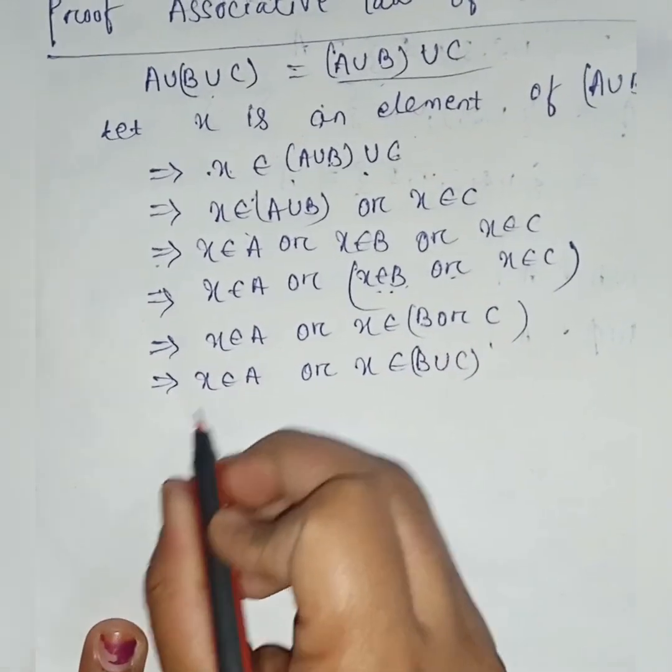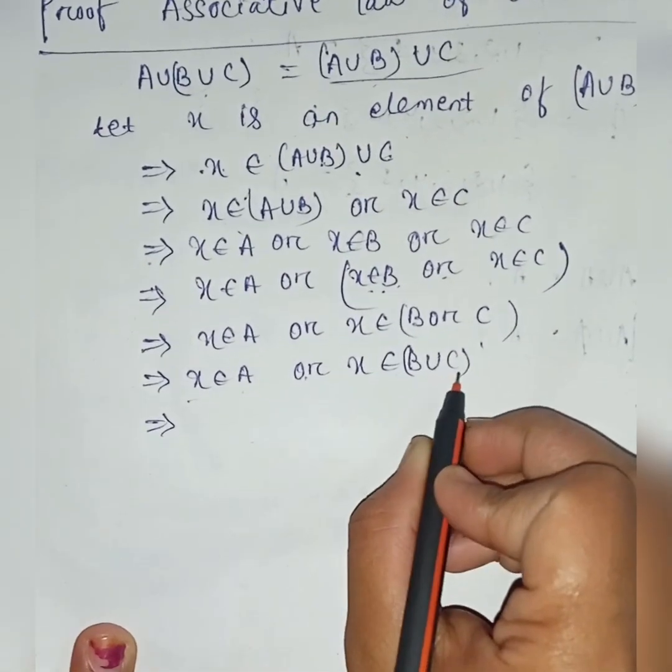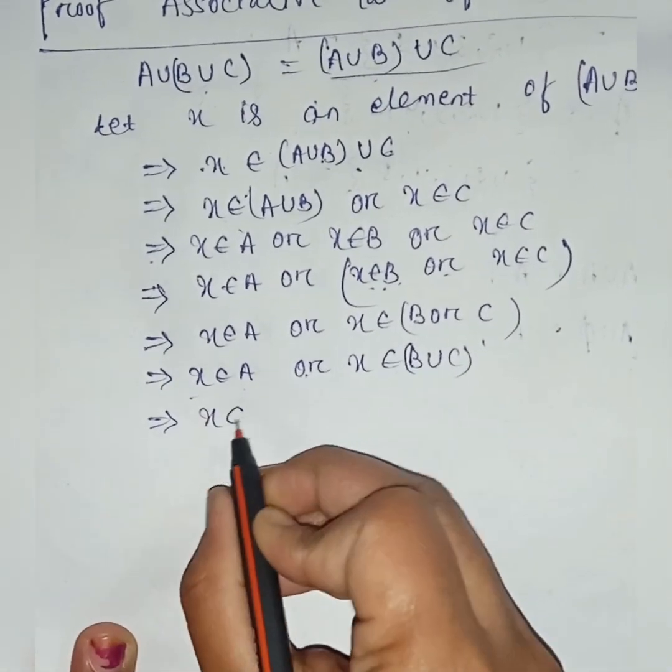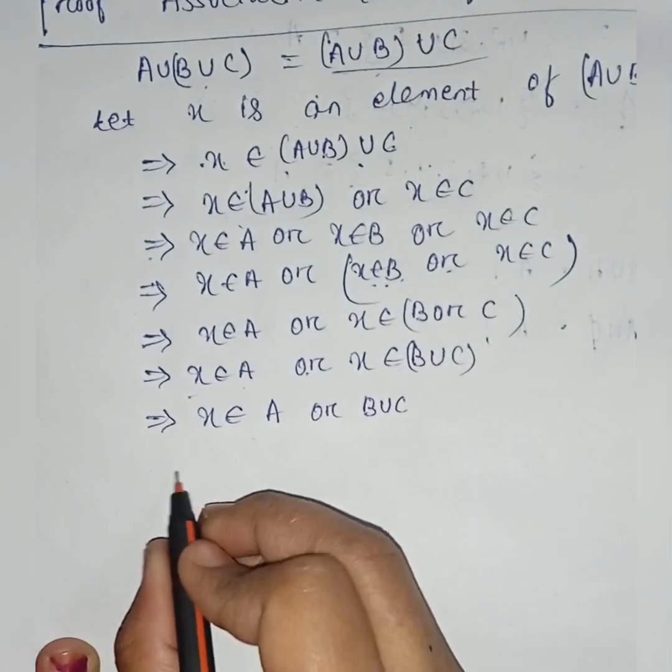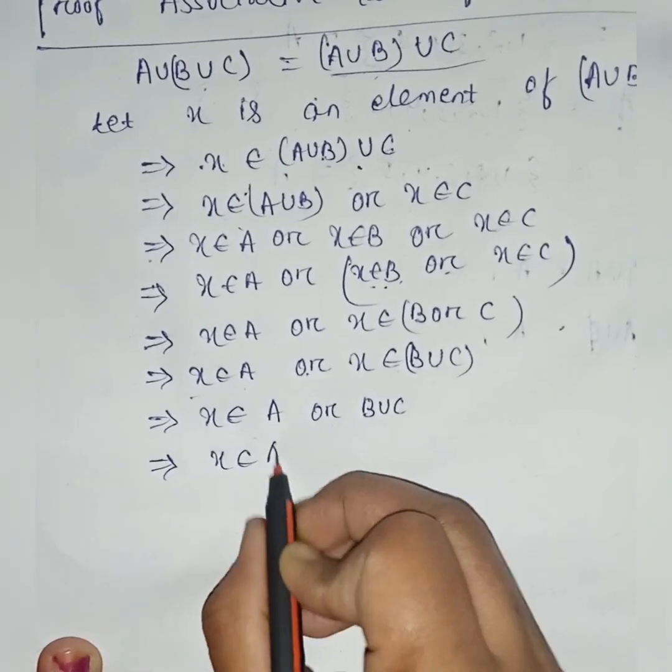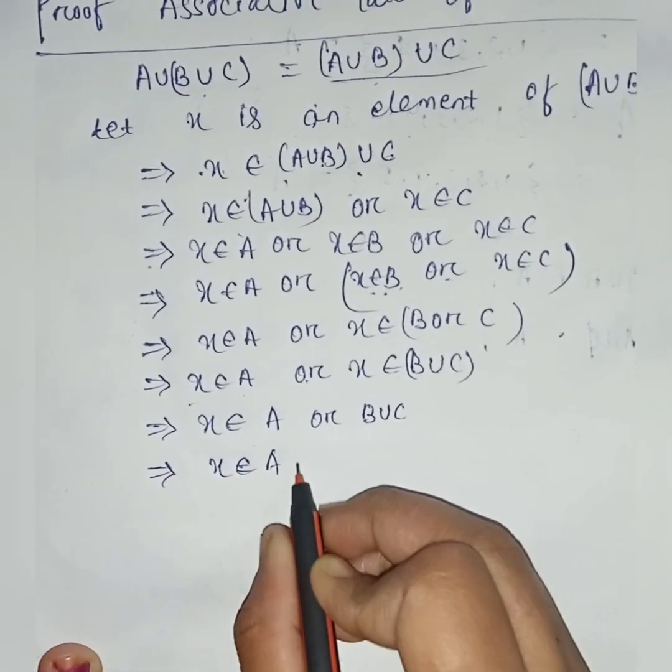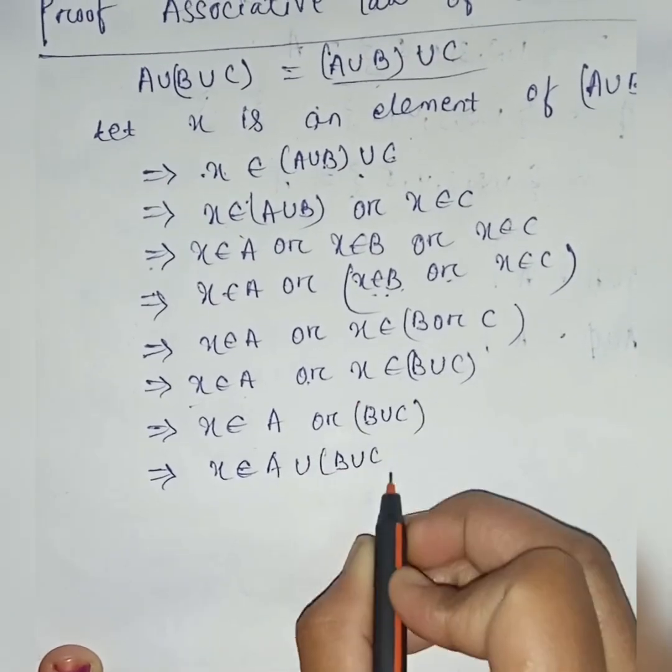Then x belongs to A or x belongs to B union C. That implies x belongs to A union B union C in brackets.